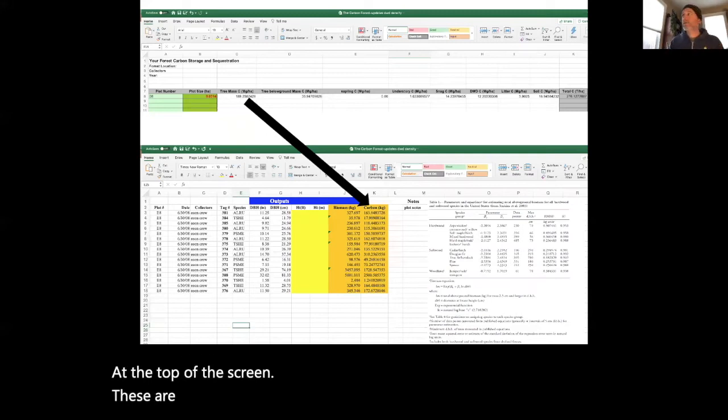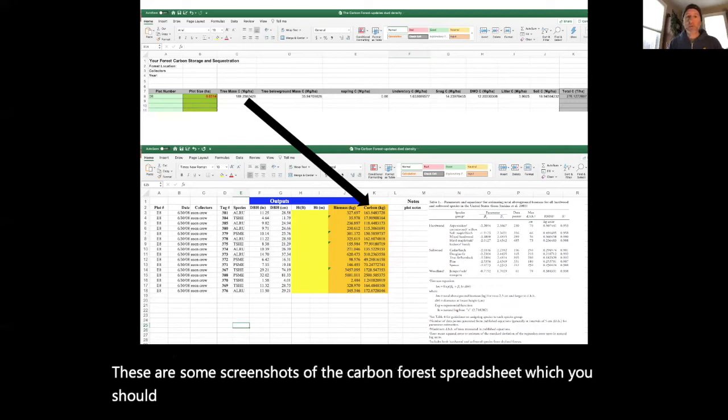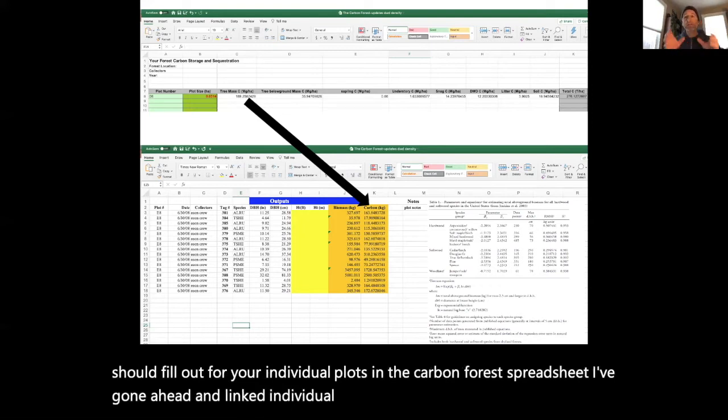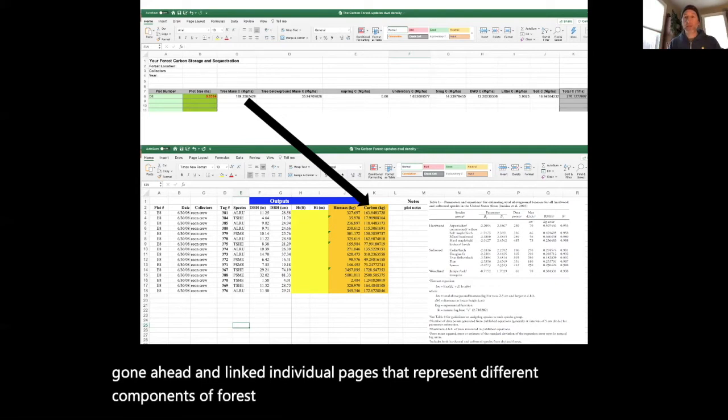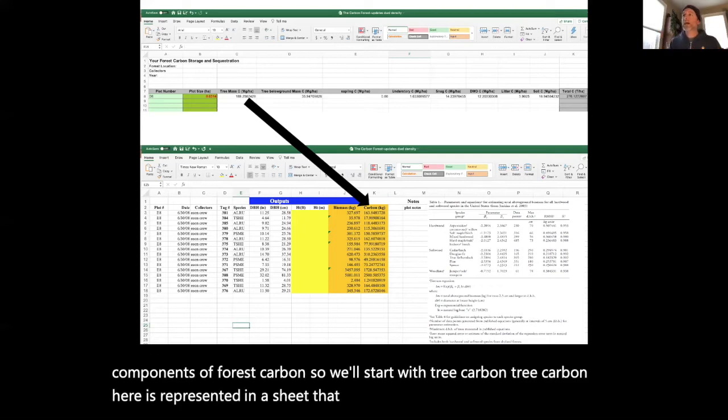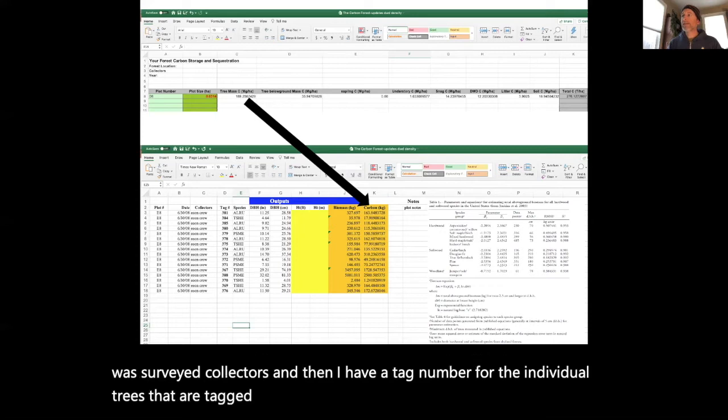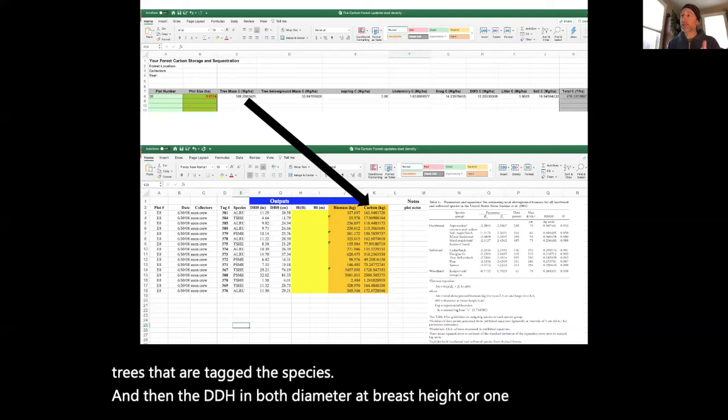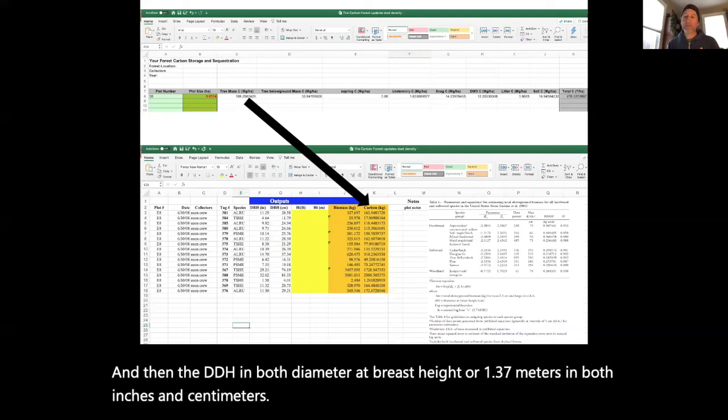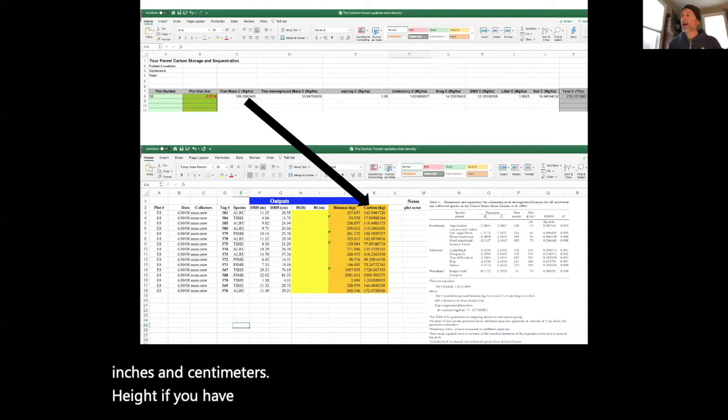These are some screenshots of the carbon forest spreadsheet, which you should fill out for your individual plots. I've gone ahead and linked individual pages that represent different components of forest carbon. We'll start with tree carbon. I have a plot number, a date it was surveyed, collectors, and then I have a tag number for the individual trees that are tagged, the species, and then the DBH, diameter at breast height at 1.37 meters, in both inches and centimeters. Height if you have it, and then the biomass estimation.